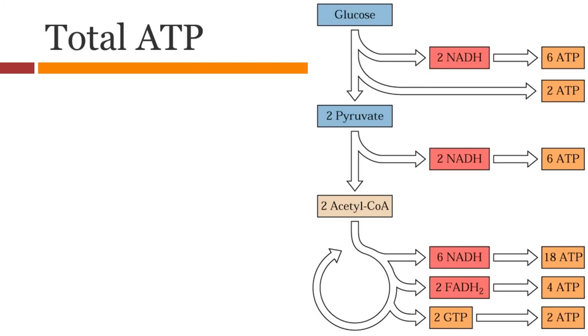So what is the total ATP produced from one glucose molecule? If you add up all these numbers, you will get 38 ATP per glucose molecule.